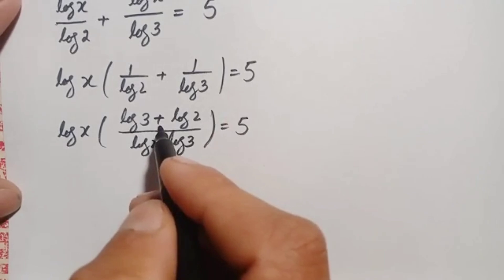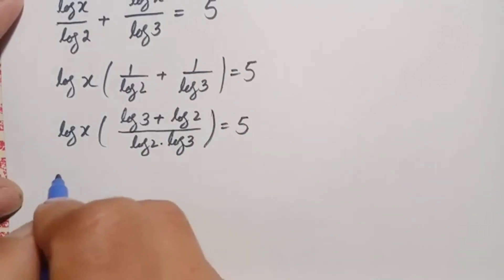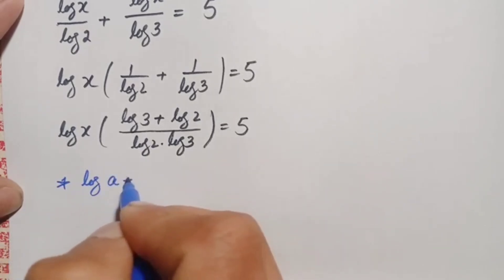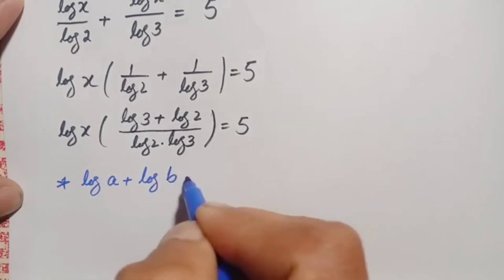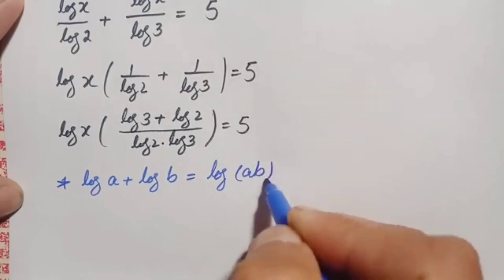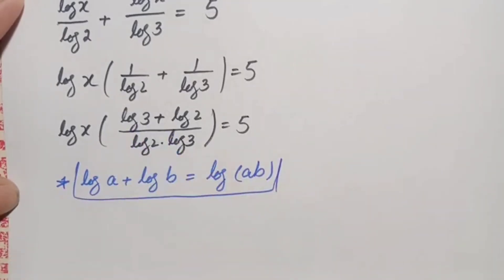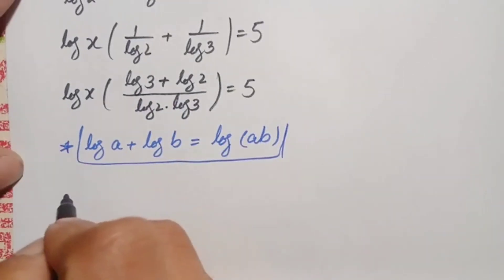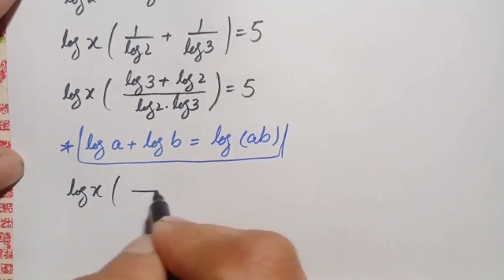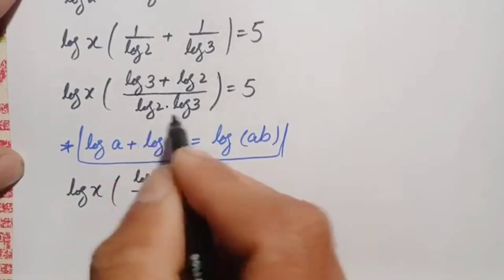In the numerator, we use another logarithm result: log of a plus log of b equals log of a times b. Using this result, the numerator log of 3 plus log of 2 becomes log of 6, since 3 times 2 is 6. So we have log of x times log of 6, divided by log of 2 times log of 3, is equal to 5.